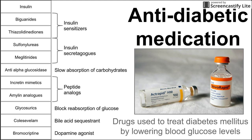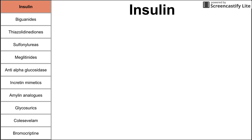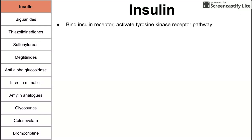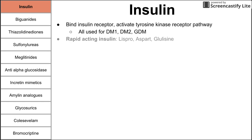Those grab-bag drugs are a bile acid sequestrant, colesevelam, and bromocriptine, a dopamine agonist. We're going to start by talking about insulin, which is a protein that decreases blood glucose levels. Insulin comes in many formulations. All of them bind the insulin receptor, which activates a tyrosine kinase receptor pathway that produces the many effects of insulin. These insulin variants can be used for diabetes type 1, type 2, as well as gestational diabetes.